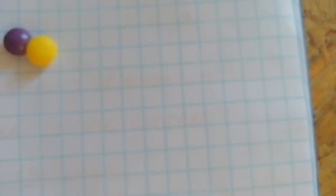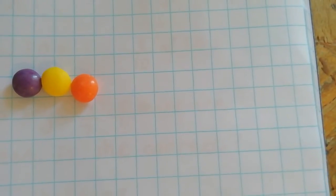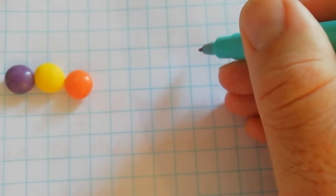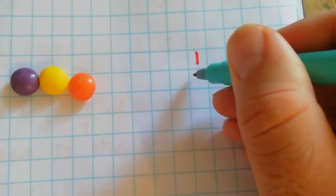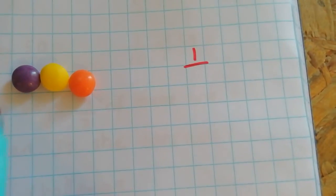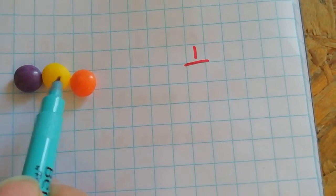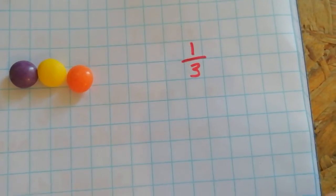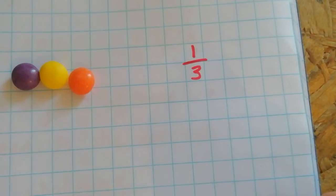What about if I add some more into it there? Now what fraction of these are purple? Well again I've got one purple, one out of one, two, three in total. So one third of them are purple.